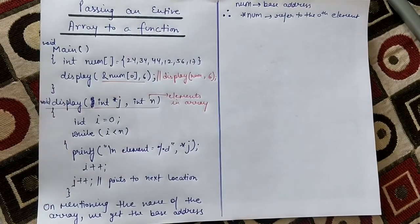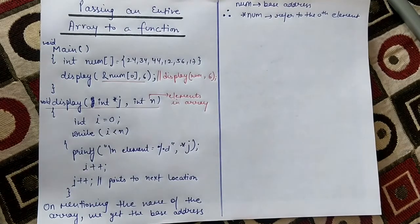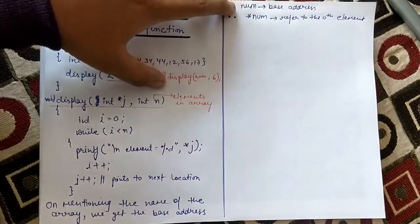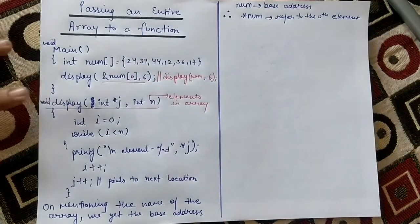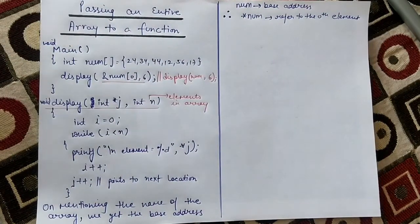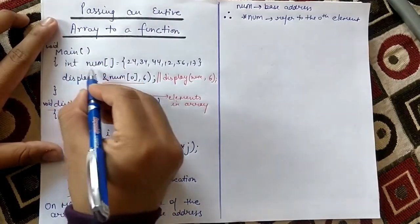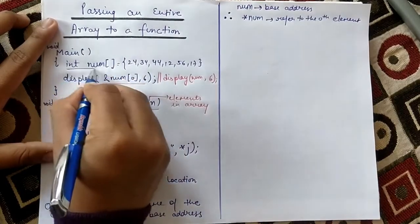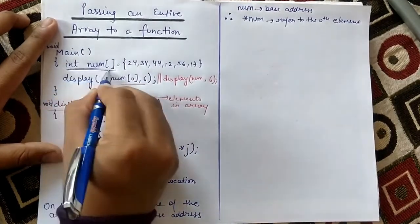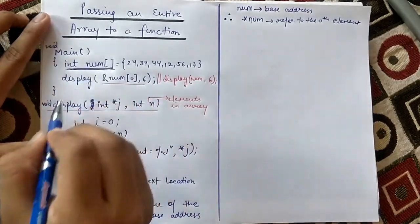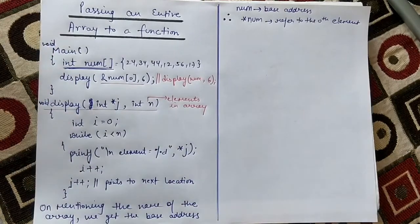This was the concept we discussed in the previous video as well. Now we will see what actually happens inside — how the array which we write gets converted into pointer notation by the compiler. So this is the normal notation which we know, but inside the compiler this is not happening directly; what is happening is it is getting converted into pointer notation.